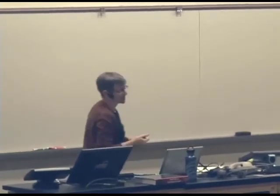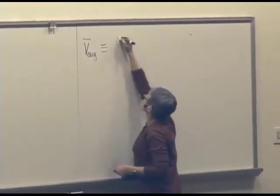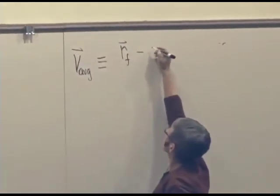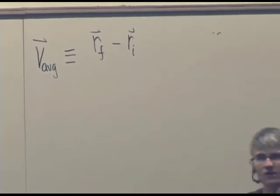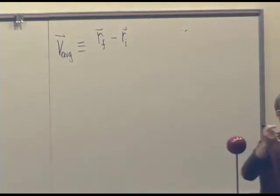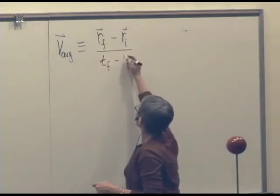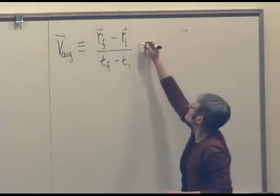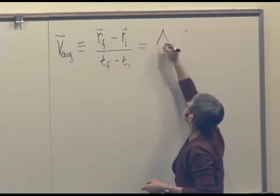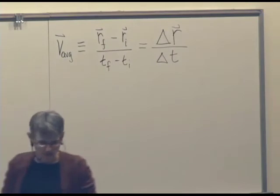So we define the average velocity of an object, of a system, in the following way. And this is a definition, so we'll write it as V average, is defined as the change in its position in three dimensions. So we have, we've been using R relative to some origin here to represent a position. What are these F and I things? Final and initial. So we're taking some time interval that starts at some initial time and ends at some final time, divided by the change in time. So change in position or displacement divided by the time. And remember, we're going to use the symbol delta to represent change, so we can write this as delta R divided by delta T. And that's a definition of average velocity.